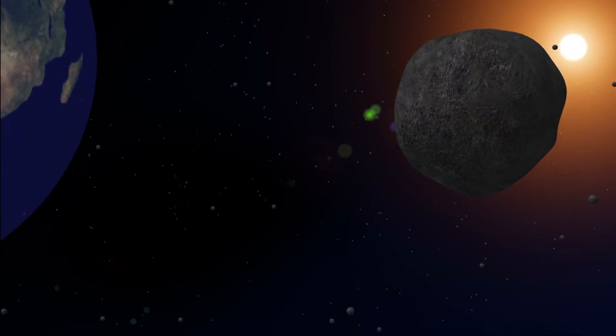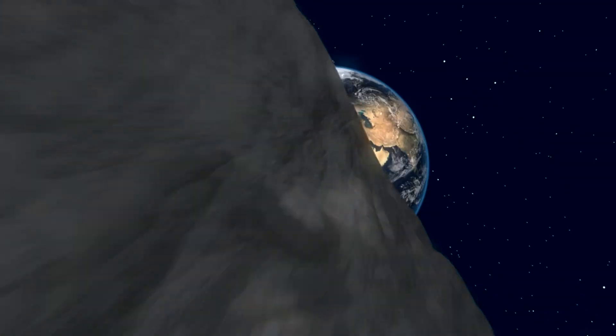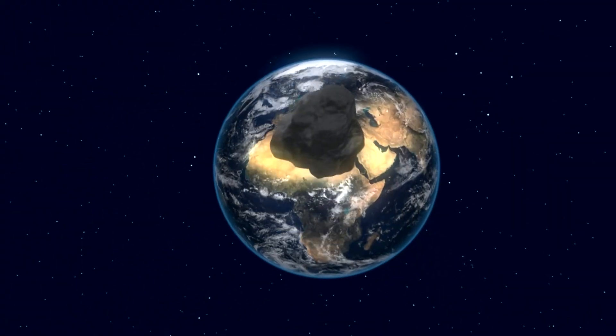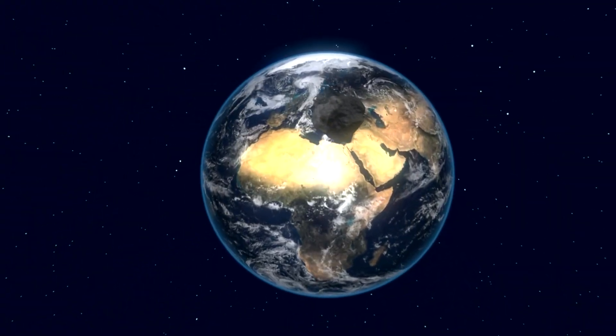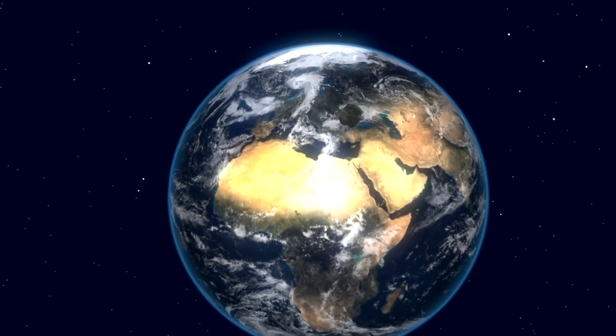Should the unthinkable happen and Apophis's path intersect with Earth's in the future, scientists are exploring a range of strategies to mitigate the risk. From gentle nudges using spacecraft to gravitational tugs from nearby asteroids, these hypothetical scenarios are part of a broader effort to develop planetary defense capabilities.